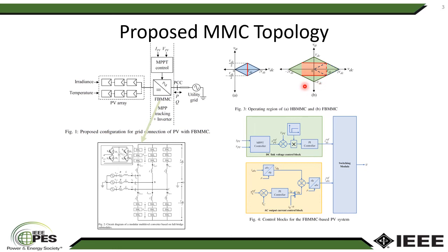So the FBMMC can offer full flexibility on the DC side. By that I mean it can provide AC output voltage with the same VDC by 2 peak using any voltage value from minus VDC to plus VDC including zero. So with these changes, new switching algorithms are proposed and can be found in the paper.